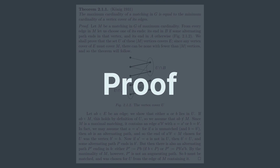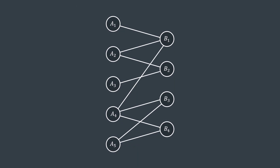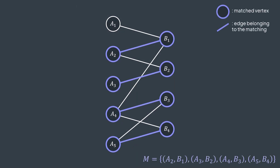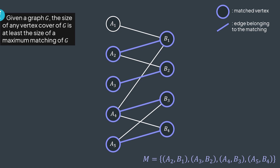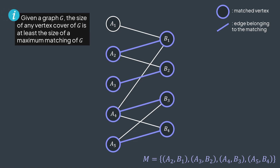We have a bipartite graph. We have this maximum matching M. We now have matched vertices — vertices incident to one of the edges in the matching — and remaining ones are unmatched vertices. Something you now need to understand is that any vertex cover must have at least the size of M, even for general graphs.